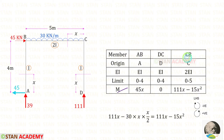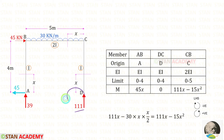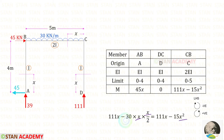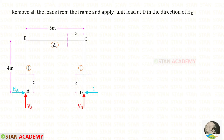Let us find M in CB. Up to this section we have VD and the uniformly distributed load of 30 kN/m. VD is acting in the anticlockwise direction, so it will be positive and the distance is x, giving 11x. The UDL is acting in the clockwise direction, so it will be negative. With the UDL we multiply the distance and then the distance by 2: x × x gives x², and 30/2 gives 15, so M = 11x − 15x².